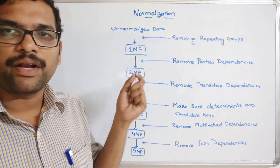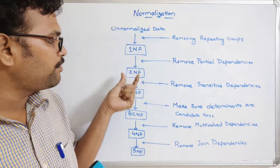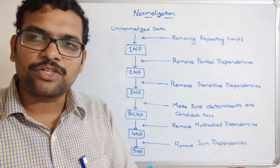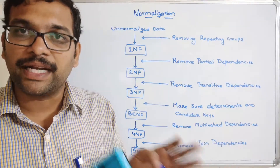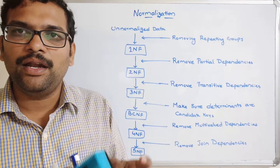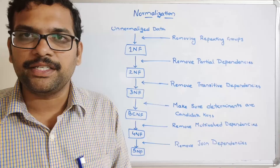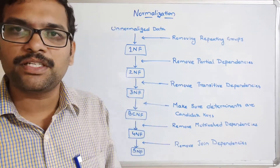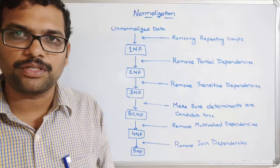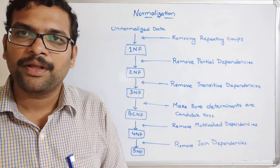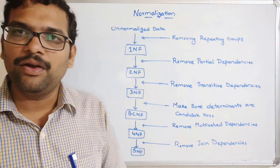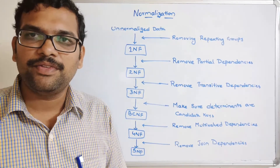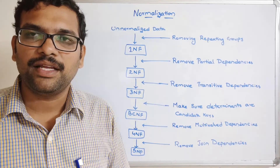In our next session, we will start with 1NF and go through each normal form in detail individually. I recommend going through the previous sessions on functional dependency, types of functional dependency, axioms, and finding candidate keys and super keys using functional dependencies — I'll post the playlist link in the description. If you have any doubts, feel free to post in the comment section. If you enjoyed this session, please like, share with your friends, and don't forget to subscribe to our channel. Thanks for watching.